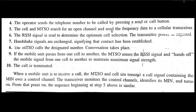The cell phone and MTSO search for an open channel and send the frequency data to the cellular transceiver, which is always in optional mode — either only transmitter or only receiver. The RSSI — receiver signal strength indicator — signal is read to determine optimum cell selection, which is done by the MTSO. A handshake signal is exchanged and contact is established; the MTSO calls the designated number.